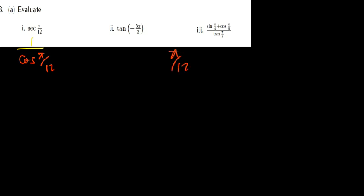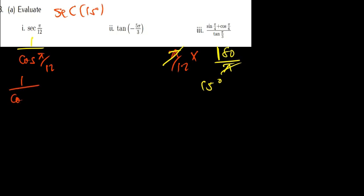The best thing here is we know that sec is the same as 1 over cos. So sec(π/12) is the same as 1 over cos(π/12). Now, π/12 — the best way to deal with this is to convert it to degrees. Converting π/12 to degrees: multiply by 180 divided by π, so π and π cancel, giving 180 divided by 12, which is 15. So the angle we're talking about is 15 degrees, meaning sec(π/12) is the same as 1 over cos(15°).